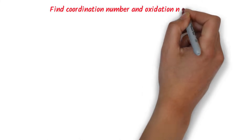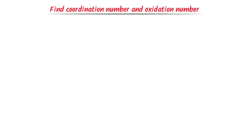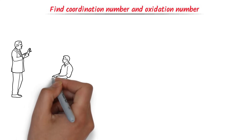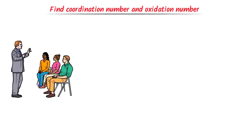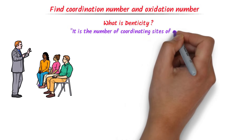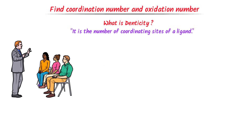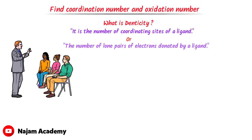How to find coordination number and oxidation number of coordination compounds? To learn this concept, we must learn the concept of denticity. We define denticity as the number of coordinating sites of a ligand, or the number of lone pairs of electrons donated by a ligand.